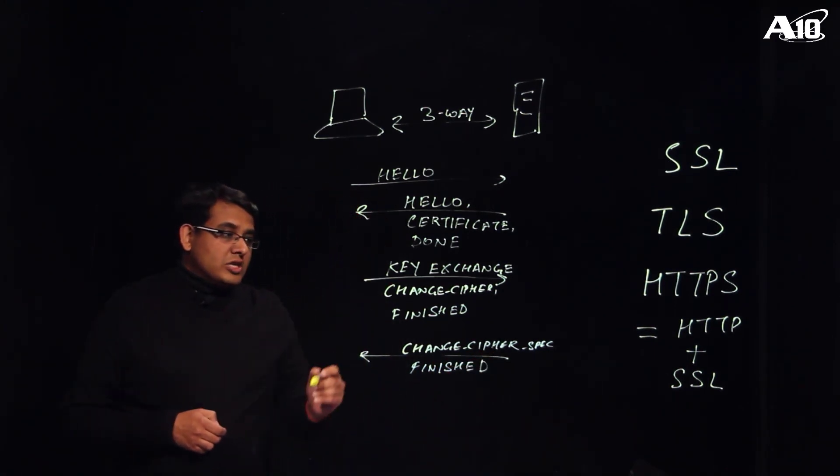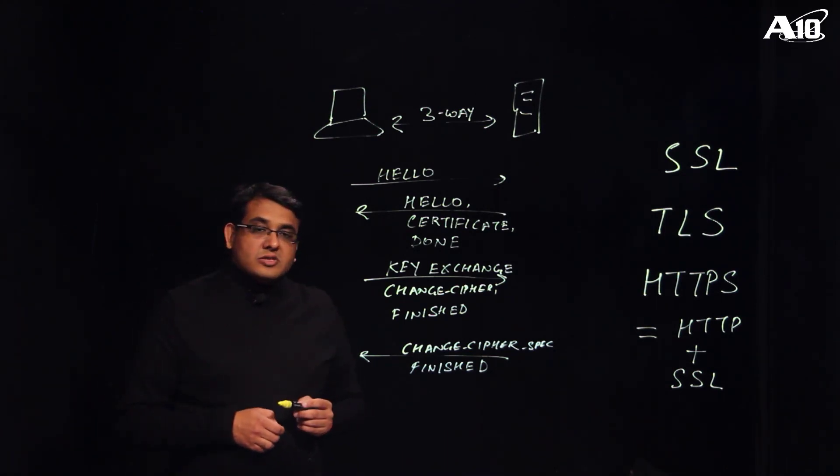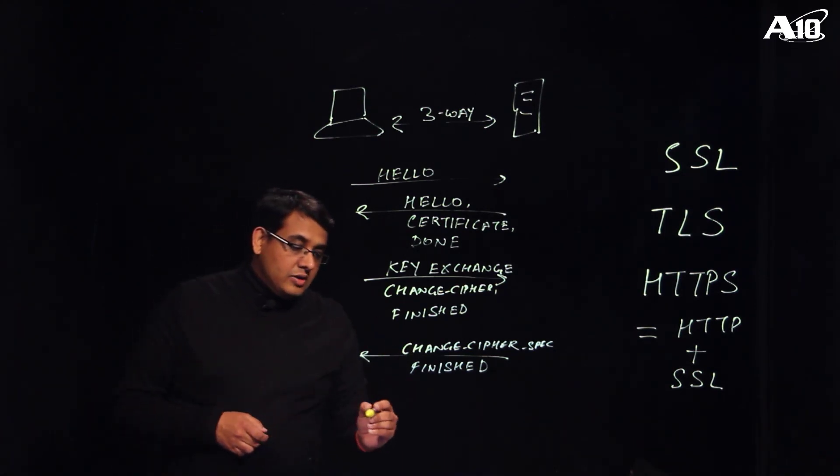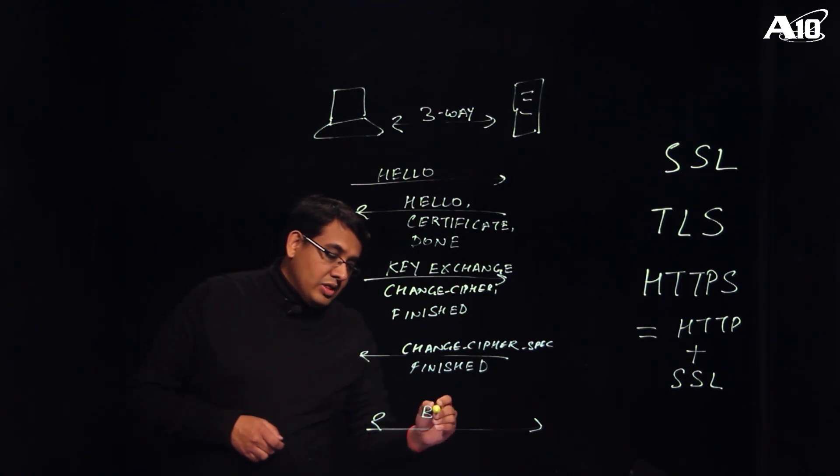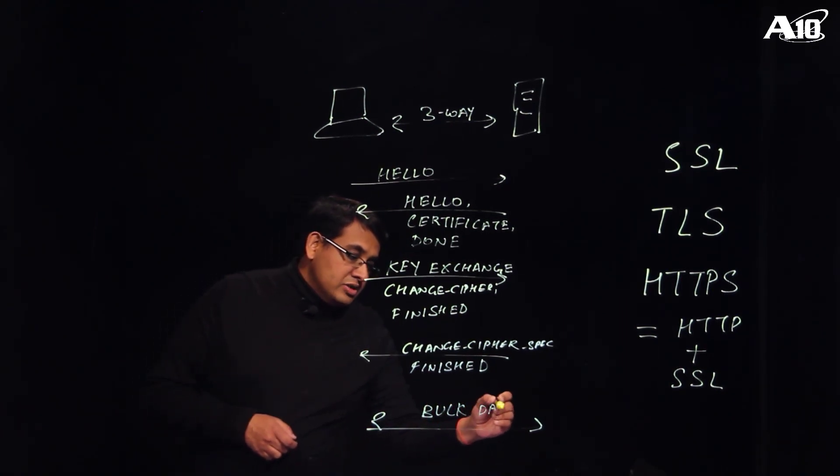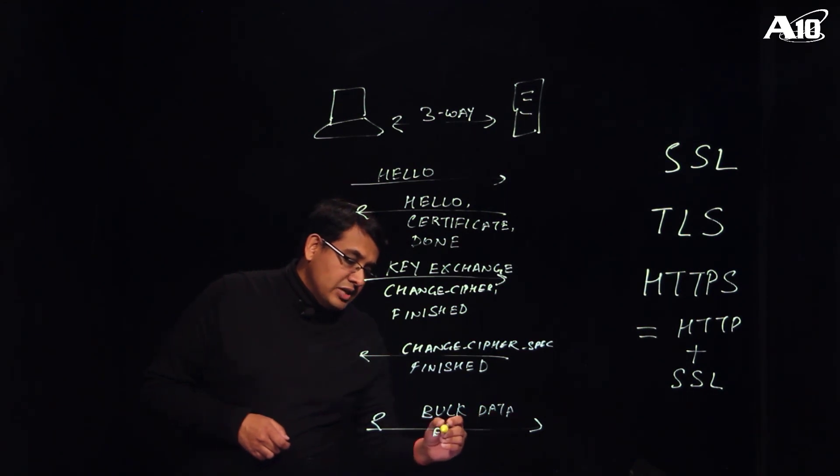Once this communication has taken place, both the client and the server have a shared secret key which now they can use for encrypting the bulk data between them. So this bulk data is encrypted using the shared key which both the client and the server have derived.